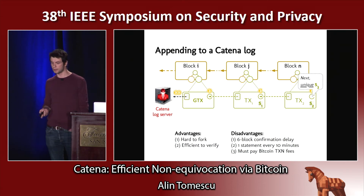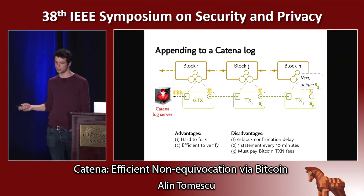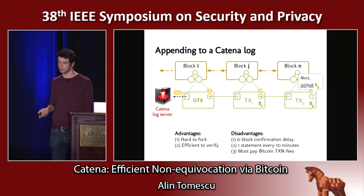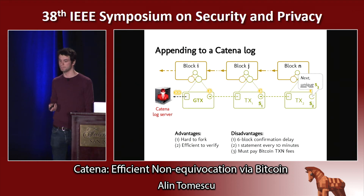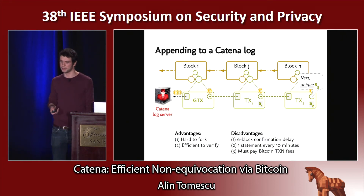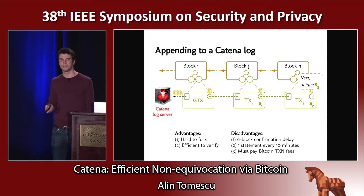The disadvantages, however, are that before we can accept S2, for example, we need to wait for six more blocks to be built on top of block N — this is just a heuristic, and in practice you might actually want to do more. That amounts to around an hour delay before you can accept the statement. Also, you can only issue a statement every 10 minutes, since it doesn't make sense to issue two statements in a block — you might as well merge them. And we have to pay Bitcoin transaction fees; when we wrote the paper they were around 12 cents, but now they're more like 70 cents.